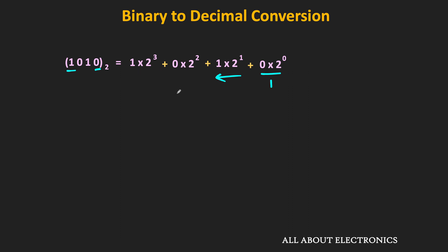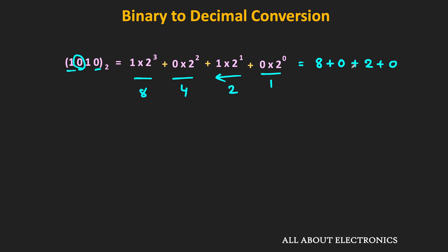For example, in the binary number 1010, this 0 is the LSB, so it gets multiplied by 1. The next bit is 1, so it gets multiplied by 2. Then the next bit is 0, multiplied by 4. And the MSB gets multiplied by 8. The decimal equivalent is the summation of all these products: 8 + 0 + 2 + 0 = 10. That means the decimal equivalent of binary 1010 is 10.